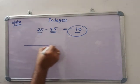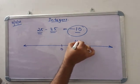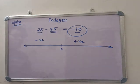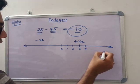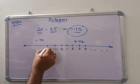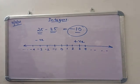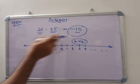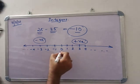On a number line, there is a positive side and a negative side. So 1, 2, 3, 4 and so on. Similarly, minus 1, minus 2, minus 3, minus 4 and so on. So what is an integer? All the positive numbers, all the negative numbers, along with 0.